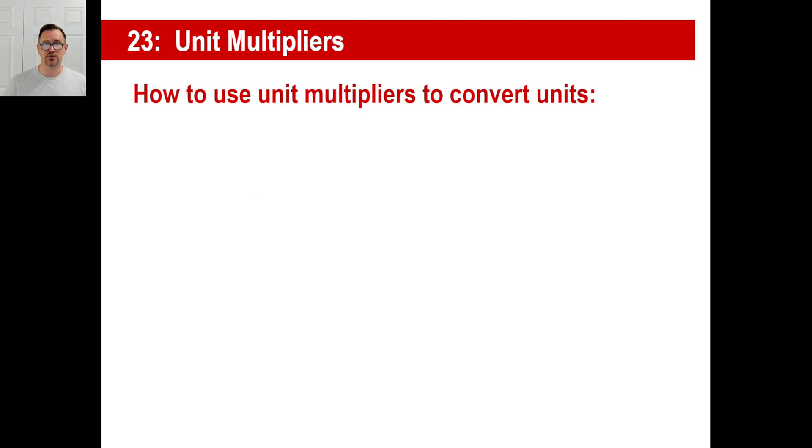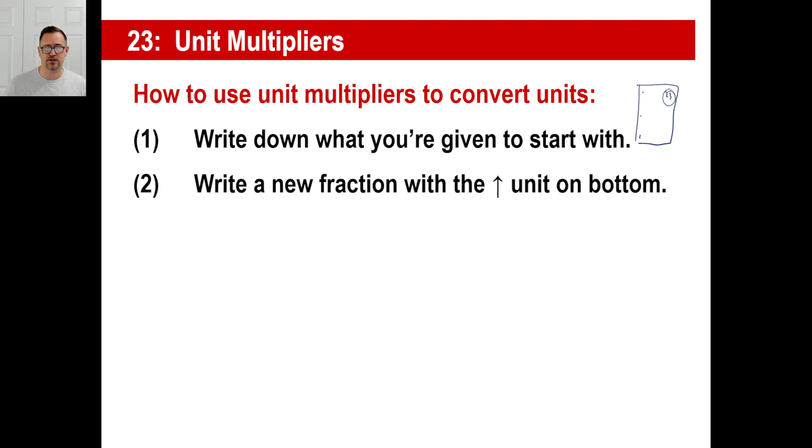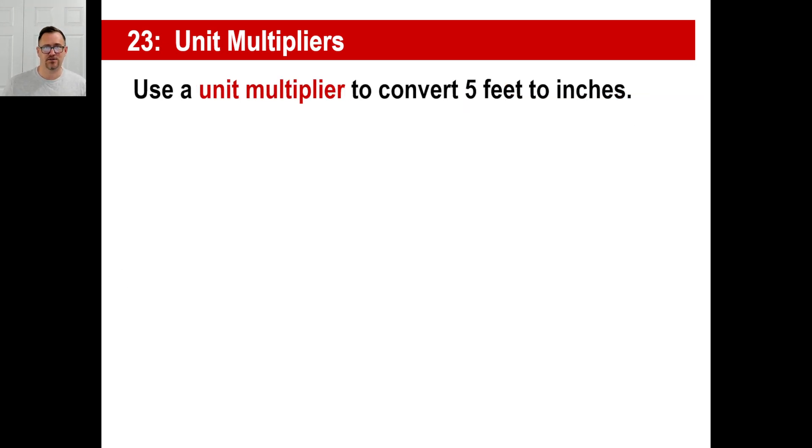Here's the way you convert units using unit multipliers. Copy this down. Make sure you have it. Make sure your pages and your notes are still like this. There's your notebook paper, and this says 23 at the top there. You want to make sure that you do this over and over. Number one, write down what you're given to start with. Number two, write a new fraction to the right of it with that unit on the bottom. You'll see exactly what I mean in a second. Number three, cancel the units and multiply and divide. Don't read that one. That's okay. That was a mistake there. Don't look back.